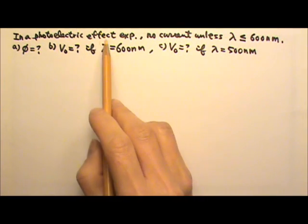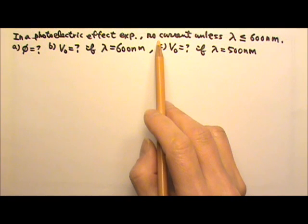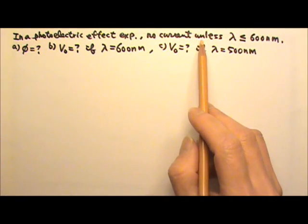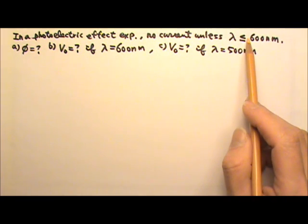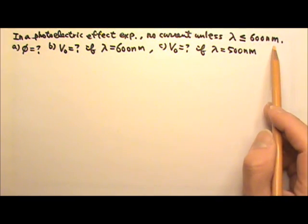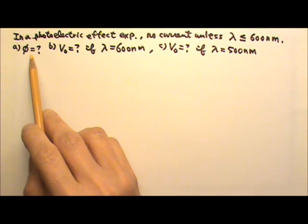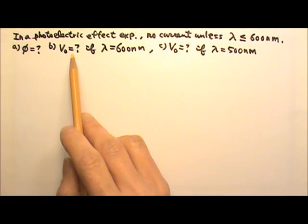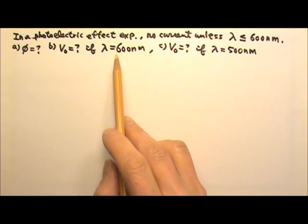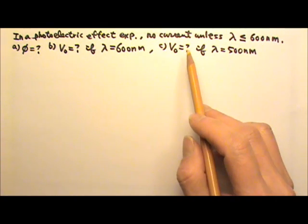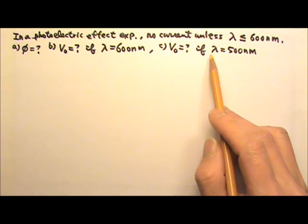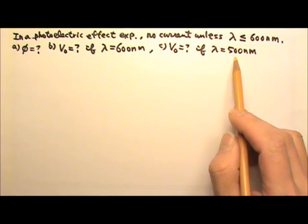In a photoelectric effect experiment, it is observed that no electric current can be produced unless the incident light has a wavelength shorter than or equal to 600 nm. Part a: What is the work function of the sample? Part b: What is the stopping voltage if the incident light has a wavelength of exactly 600 nm? Part c: What is the stopping voltage if the incident light has a wavelength of 500 nm?